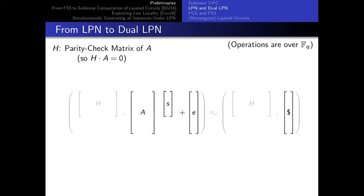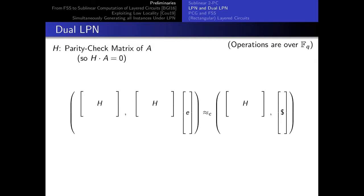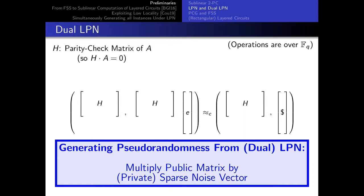If we multiply the second term by the parity check matrix, since H and A cancel out, all you're left with is H times E. So this is the dual LPN assumption: essentially, if you wish to generate a pseudo-random vector, all you need to do is multiply a public contracting matrix by some sparse noise vector. The parameters are the dimension of parity check matrix H as well as the density of the noise.